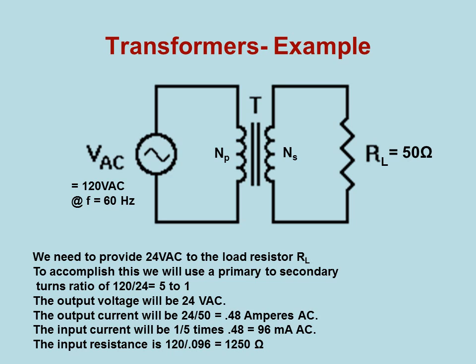Here is an example. We want to make 24 volts AC, probably to run some things at a lower voltage. A lot of control mechanisms are run at 24 volts because it's a relatively safe voltage. To accomplish this yields a primary to secondary turns ratio of 120 over 24, which is 5 to 1. The output would then be 24 volts AC. The output current will be 24 divided by 50, or 0.48 amperes AC. And the input current will be 1 over 5 times 0.48, or 96 milliamps AC.